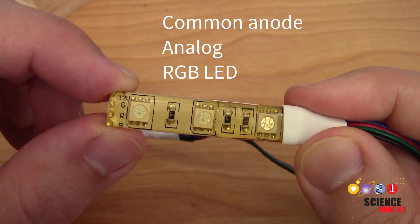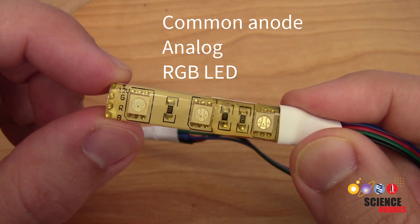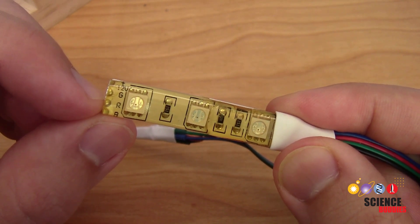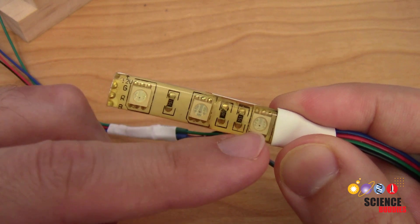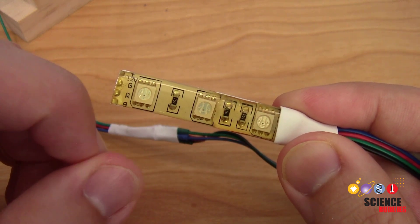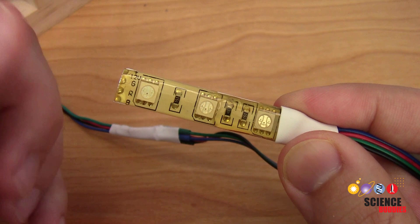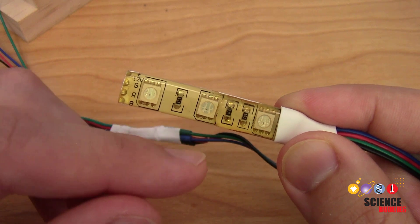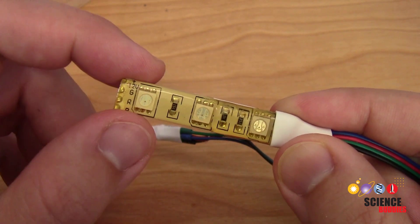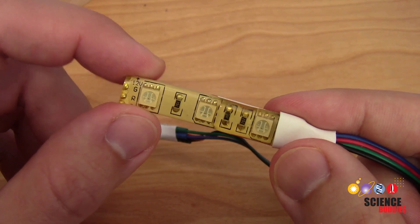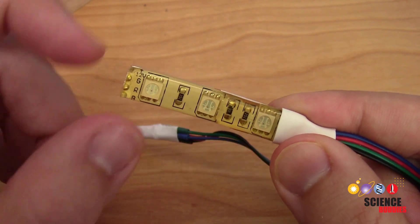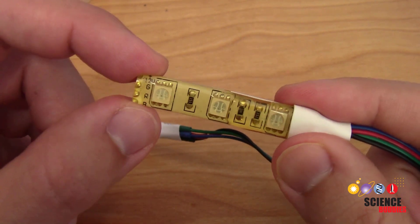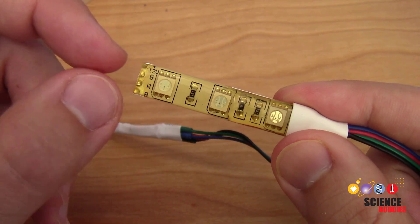This is an example of a common anode analog RGB LED strip. That's a bit of a mouthful, so let's break down what that means. Each LED on this strip actually has three LEDs with different colors: red, green, and blue. You can control these LEDs independently to mix the colors and make other colors. The red, green, and blue LEDs all have a common anode or positive connection. That's the plus 12 volt label you see on the left side of the strip. This is an analog strip where you cannot control the LEDs individually. They all turn on at once. There are separate digital strips with individually addressable LEDs that you can turn on separately. We're not going to show those in this video.